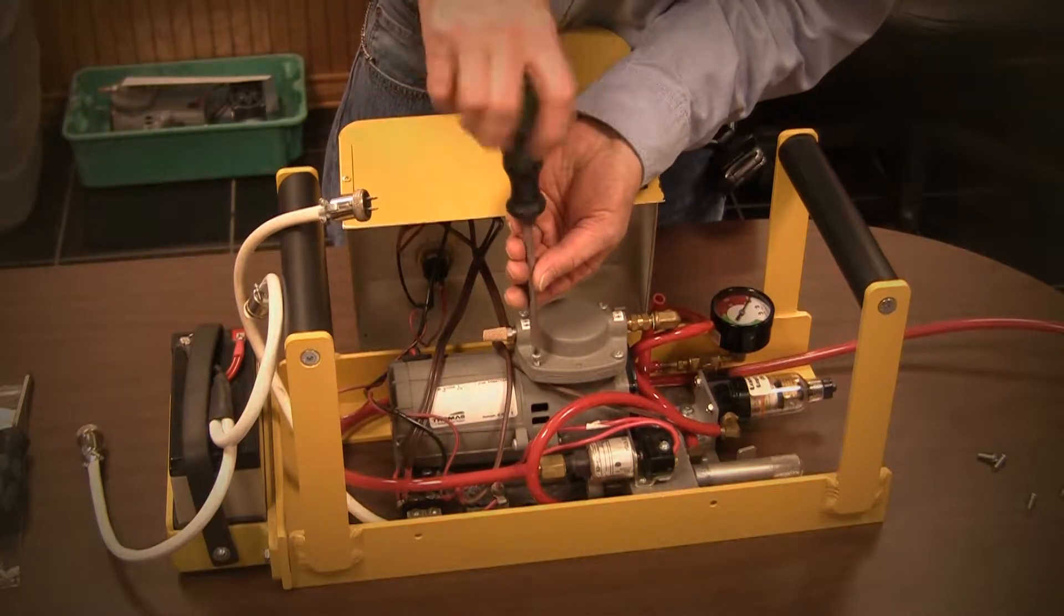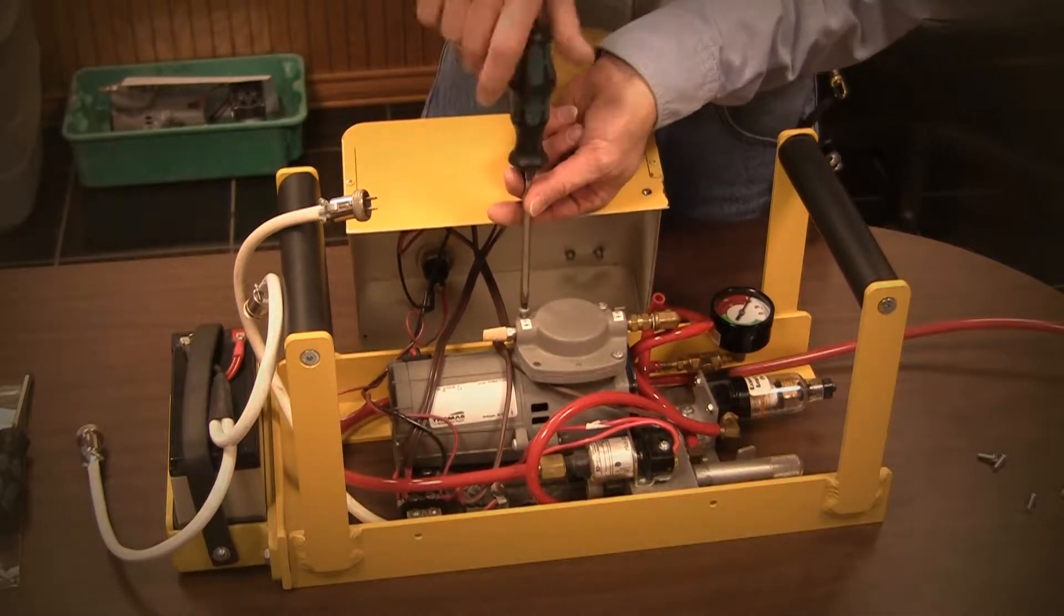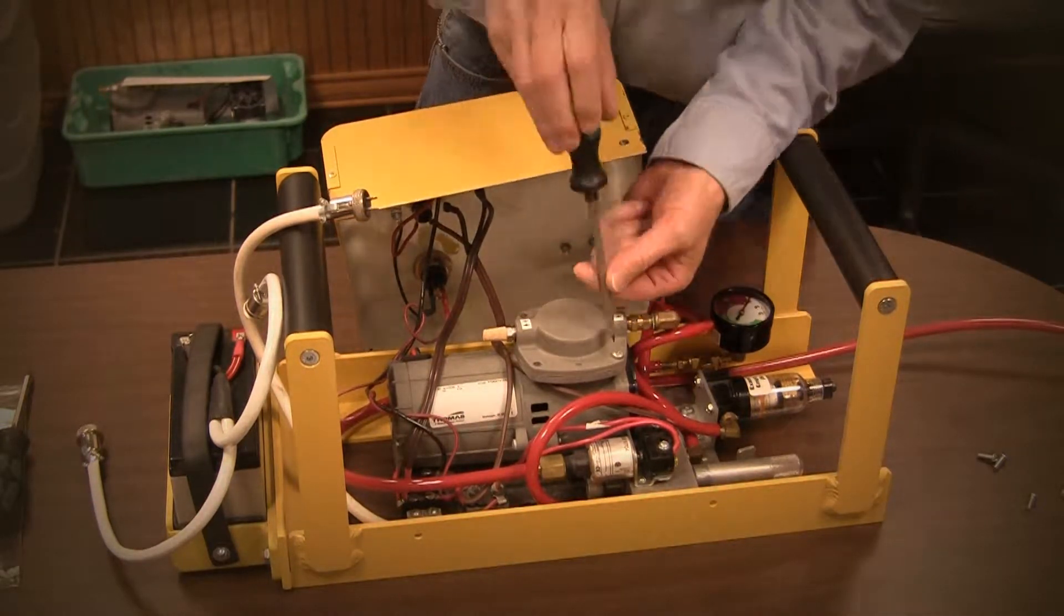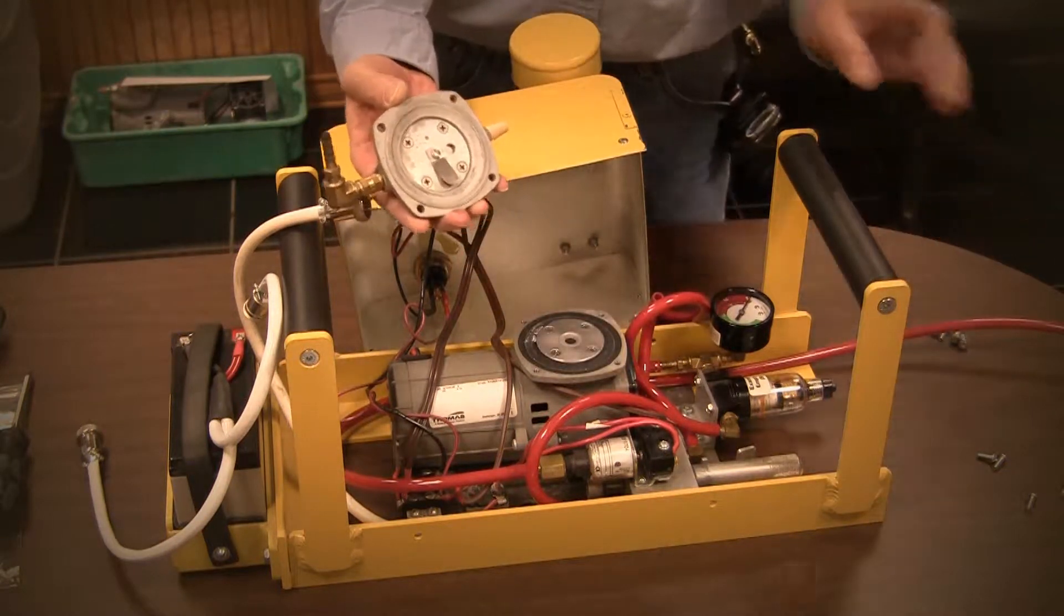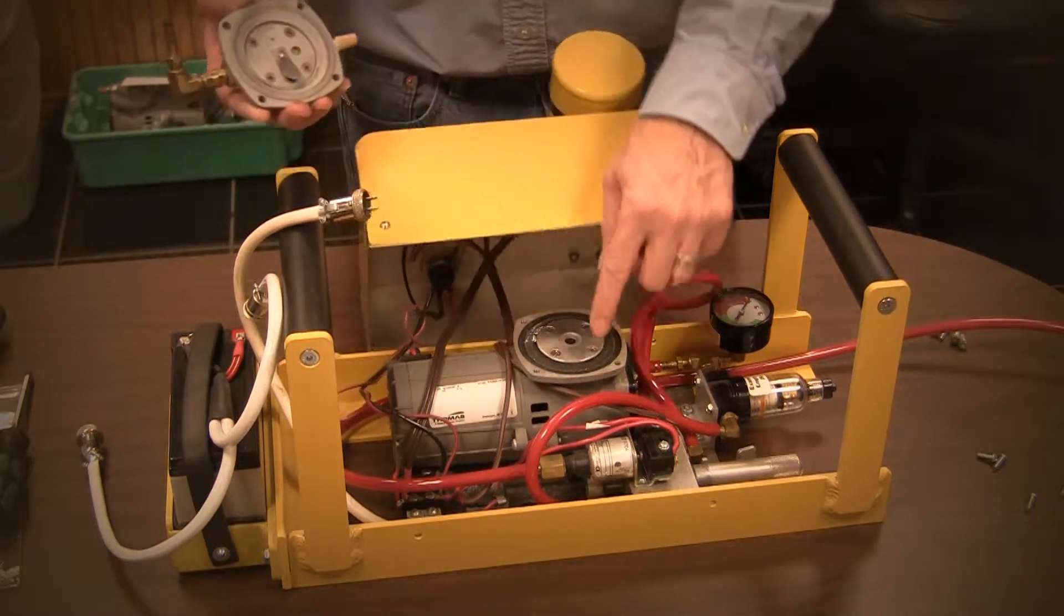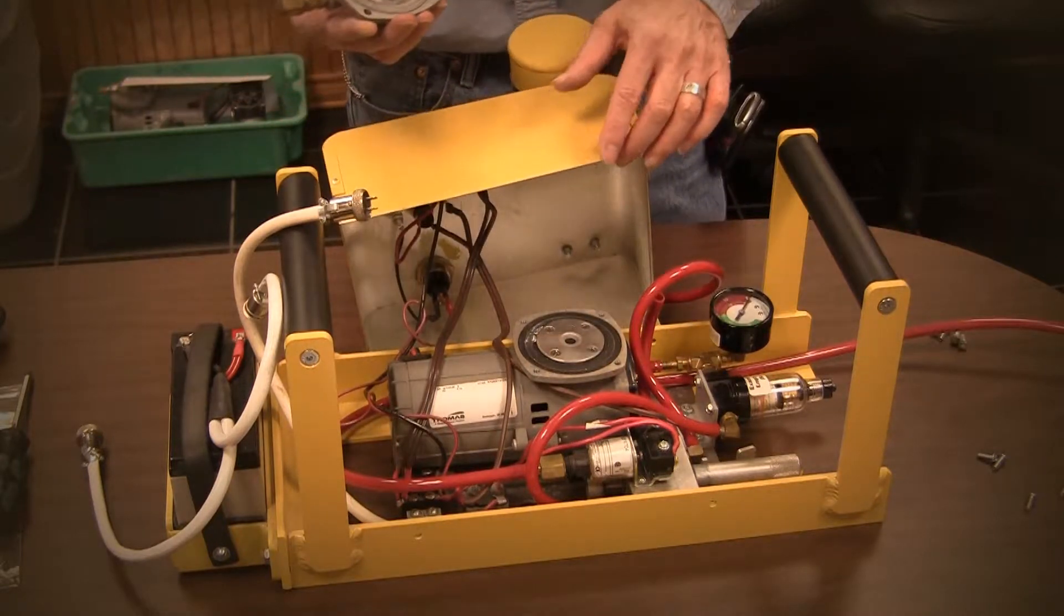Remove the four screws that secure the pump head using the flat-bladed screwdriver or Torx driver. Lift the pump head off the vacuum pump. This exposes the diaphragm and the valve plate located inside the pump head.